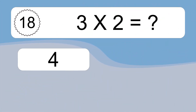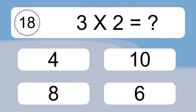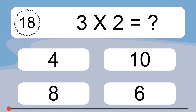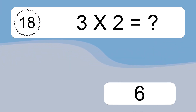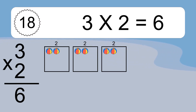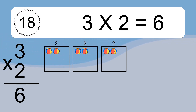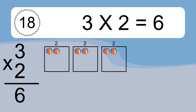3 times 2 equals what? 3 times 2 equals 6. We have 3 boxes, and each box has 2 colorful balls inside. If you count all the balls in all the boxes together, you will have 3 times 2 balls. This equals 6 balls.